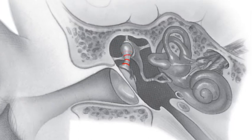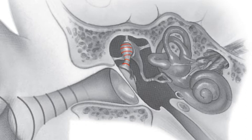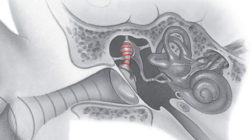This mechanical energy begins its journey through the middle ear system at the malleus, which is attached to the eardrum. When the sound wave hit the eardrum, it also vibrated the head of the malleus.